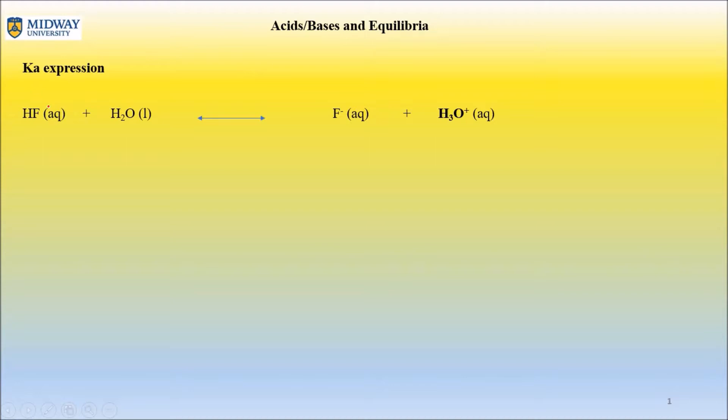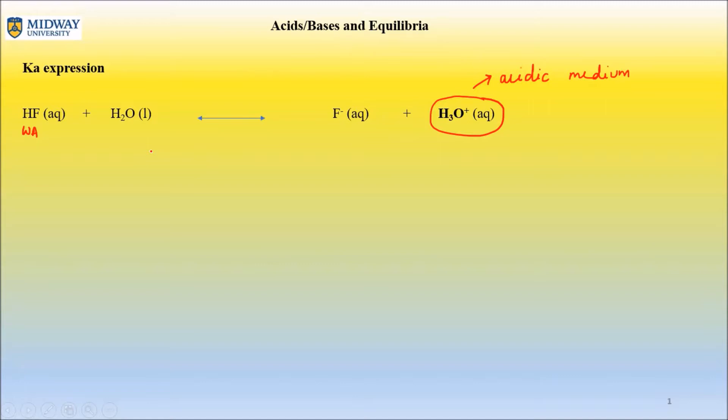First thing you've got to determine is whether what you have is an acid at all. This is an acid, and it is not one of the six strong acids, so this must be a weak acid. You can see right away that one of the products is H3O+, which means we have an acidic medium. When I give you this expression and ask you to write the Ka expression, it's because we have produced H3O+.